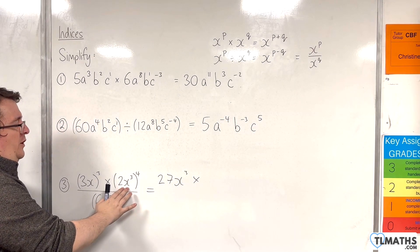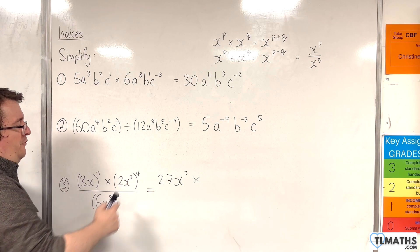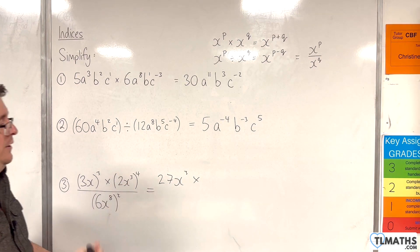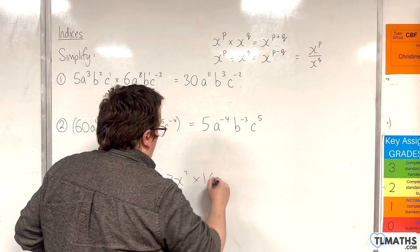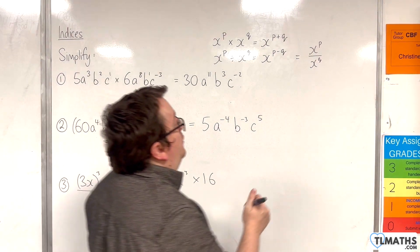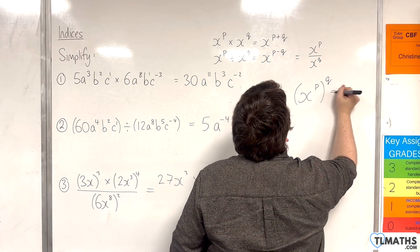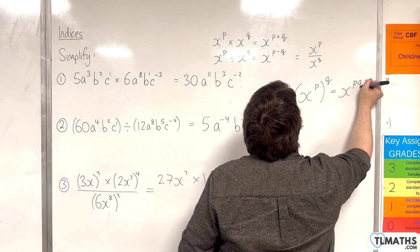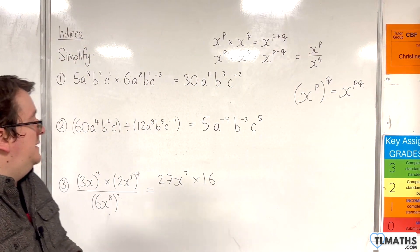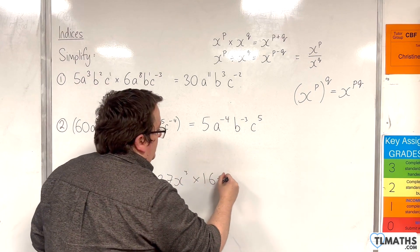Then we have 2x cubed, all to the power of 4. Now, 2 to the power of 4 is 2, 4, 8, 16. And then we have x cubed to the power of 4. Now, for this, I'm going to use the index rule x to the p to the power of q is x to the power of p times q. So you multiply the indices together. So we have 3 times 4, so 12. So x to the 12.